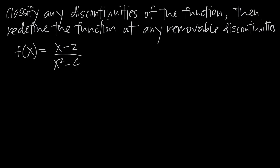A removable discontinuity is just at a single point. So what we want to do is look for discontinuities of this function, classify the kinds of discontinuities that they are, and then if any of the discontinuities we find are removable, we want to redefine the function to sort of plug the hole in the graph. We have this function f equal to x minus 2 divided by x squared minus 4.